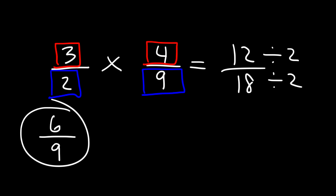6 and 9 are both divisible by 3. So we could divide both numbers by 3. 6 divided by 3 is 2. 9 divided by 3 is 3. So our final answer is 2 over 3.